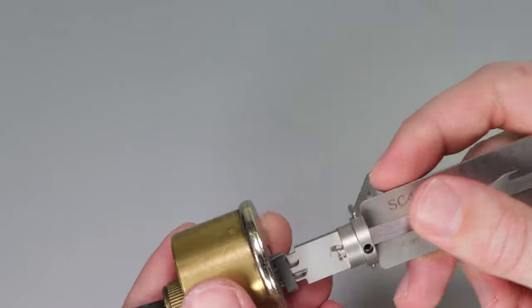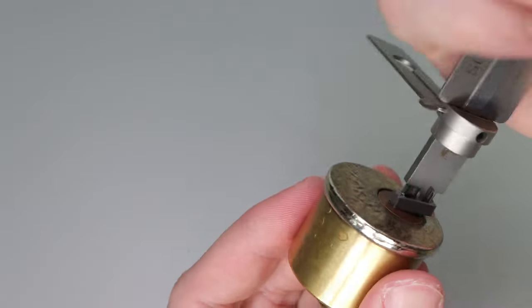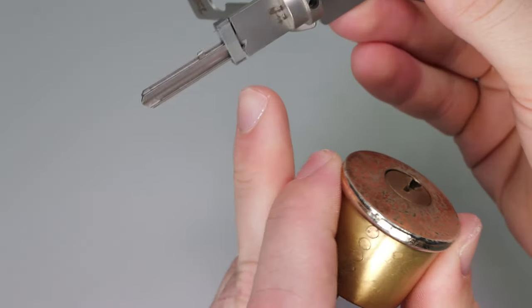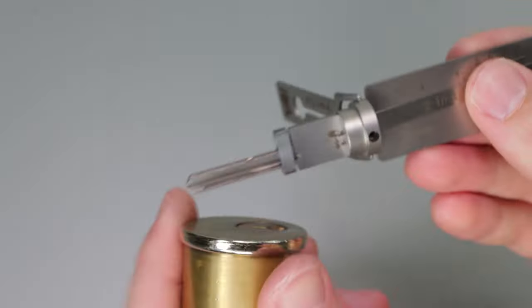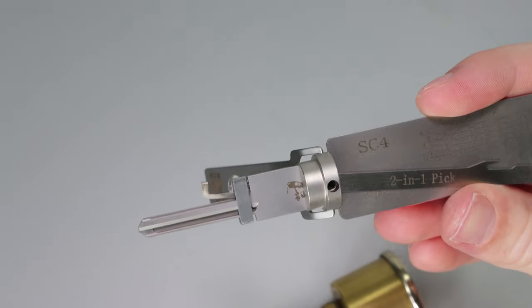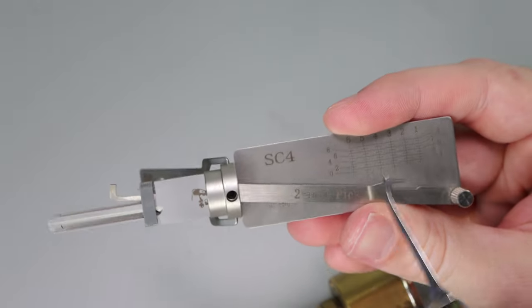Once you have the spacer installed, what you can do is you can take your lock, and it can take a little bit of force, but you're just going to push it down, and you're going to see that it's going to sit right on the shoulder here. What this is going to do is it's going to make it so that we are going to skip position 1 on our Lishi tool.